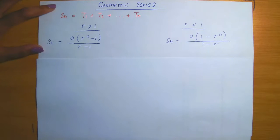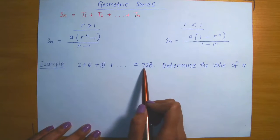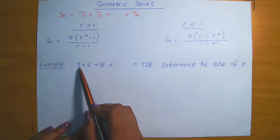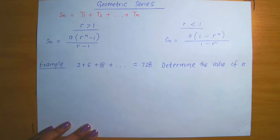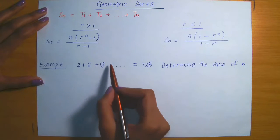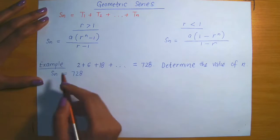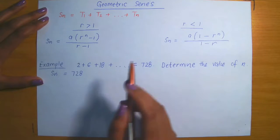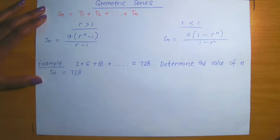Let's look at a basic application. In this example, a series equals 728 — meaning we have the sum of the terms in a sequence where the first three terms are 2, 6, and 18, continuing indefinitely. We don't yet know where it stops, but we know the sum is 728. The question is to determine the value of n — essentially, at which term do we stop adding? Before using one of the formulas, we first have to investigate the sequence.